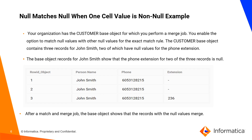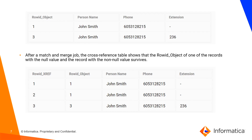We can cross-check in the cross-reference table. There we will have three records, out of which two records have the same row ID object that got merged — the ones having null extension — and the other record which does not match is also present in the cross-reference table.